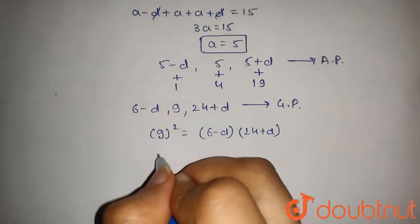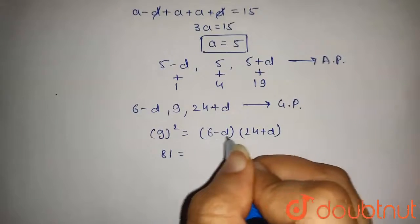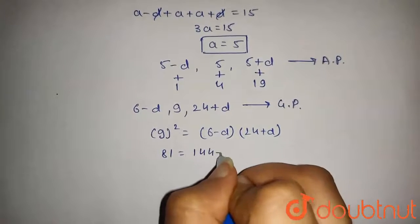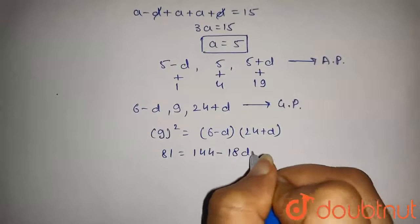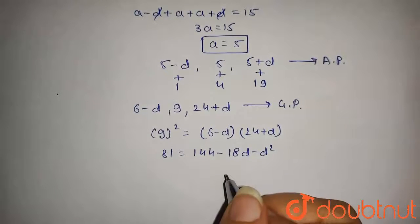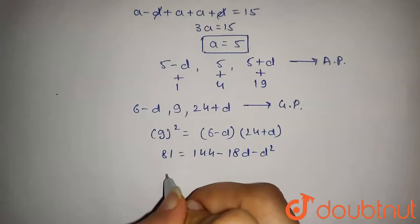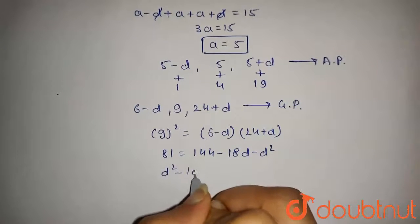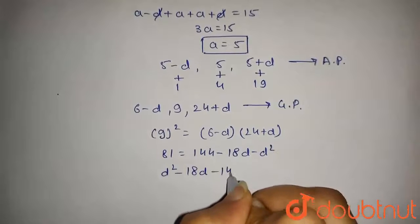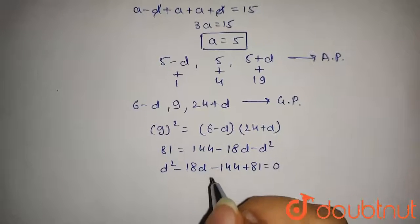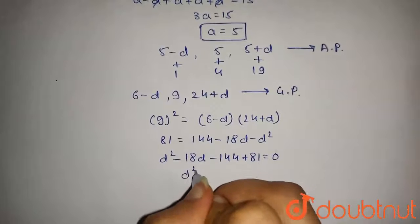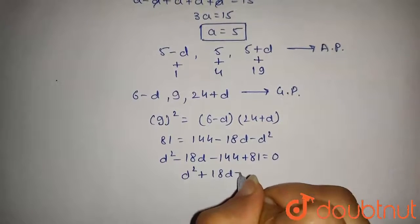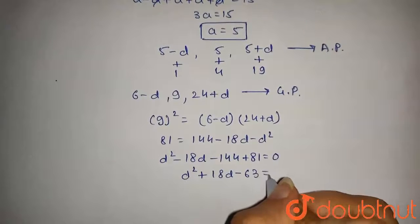9 square will be 81, so 81 equals 144 minus 18D minus D square. From this, we get D square plus 18D minus 63 equals 0.